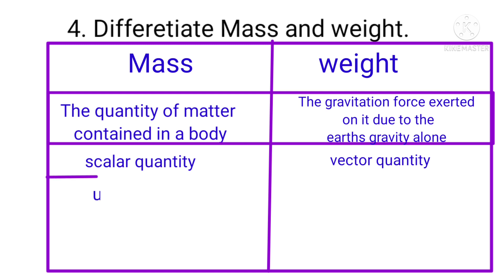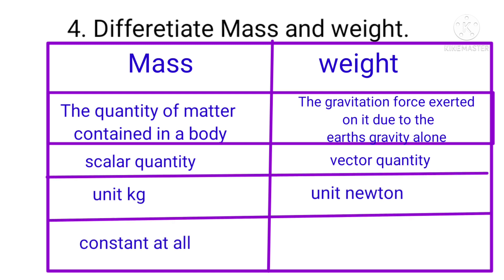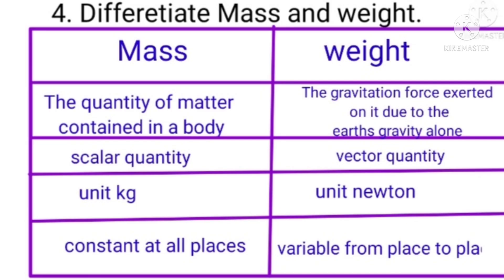Mass has the unit kilogram; weight has the unit Newton. Mass is constant at all places; weight is variable with respect to gravity.